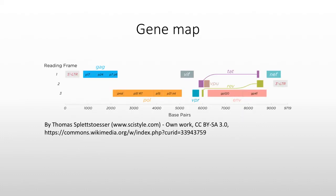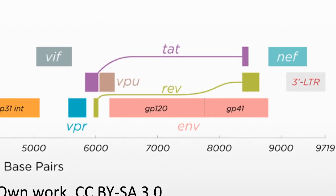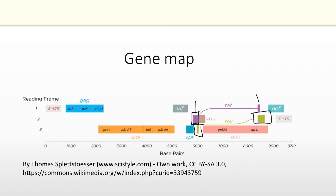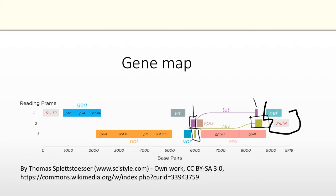Looking at the genome map again: TAT has two portions — one here and one there — and by itself the first portion has TAT activity, but the full protein requires splicing. REV also has two portions, but the entire thing is required for any activity. NEF overlaps with the 3' LTR — if you don't process the mRNA correctly, you only transcribe the LTR and don't get NEF.